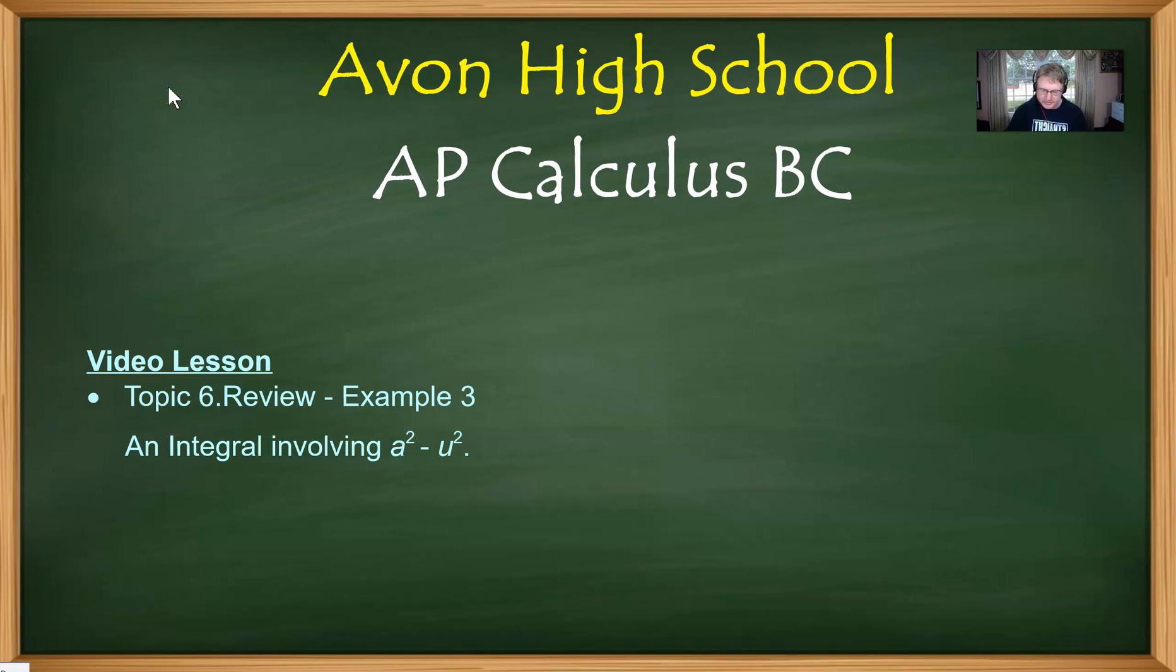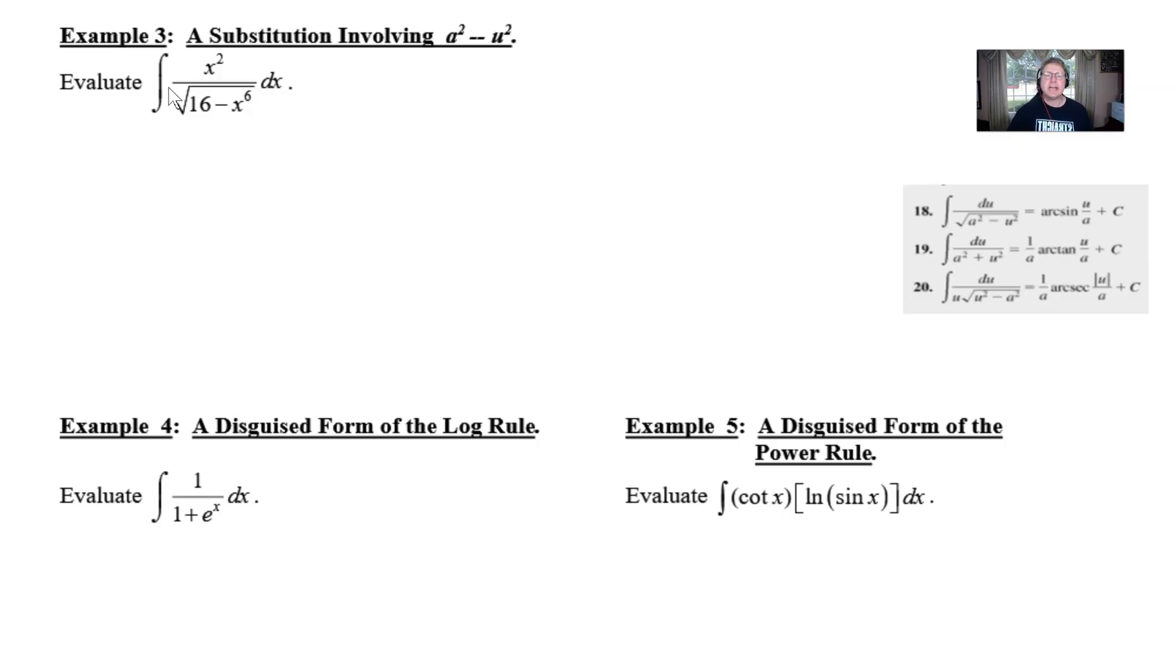That particular question has an x-squared in the numerator and a 16 minus x to the 6th in the denominator under a square root. That may not look like an a-squared minus u-squared initially, but it's going to have those same properties.